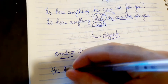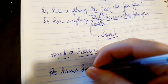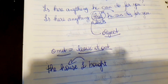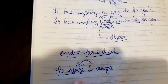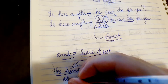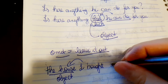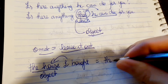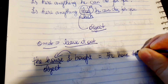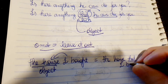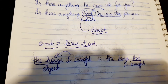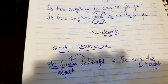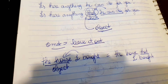Another example: 'The house I bought.' When you say 'I bought the house', 'house' is the object. So you can say 'the house I bought', or 'the house that I bought', or 'the house which I bought' — all are correct because 'house' here works as an object.